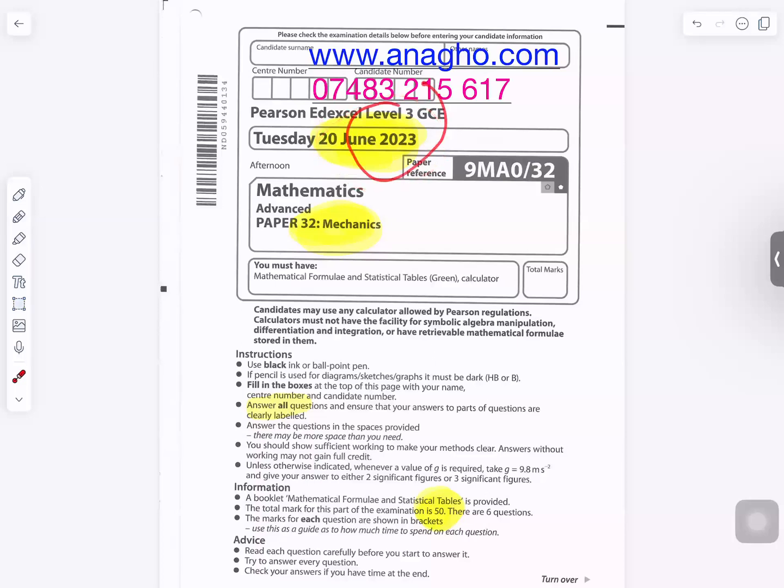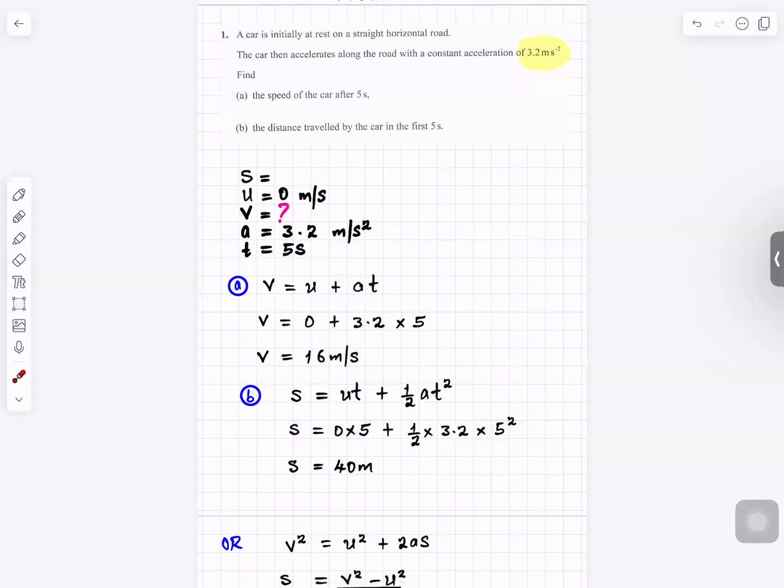Mathematics June 2023 Mechanics Advanced Level. Question number one: A car is initially at rest on a straight horizontal road. The car then accelerates along the road with a constant acceleration of 3.2 meters per second squared. Find the speed of the car after five seconds and the distance traveled by the car in the first five seconds.